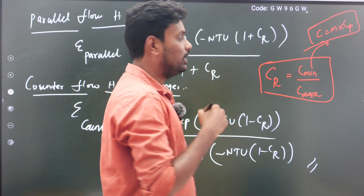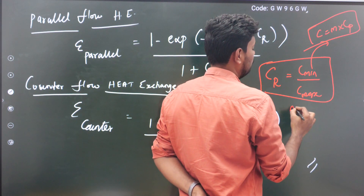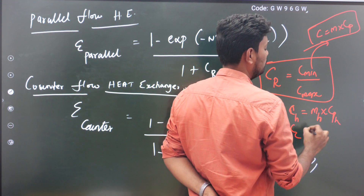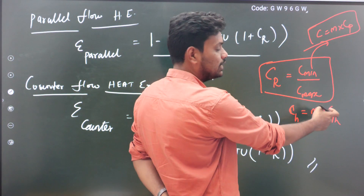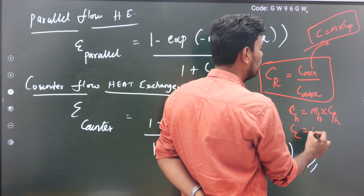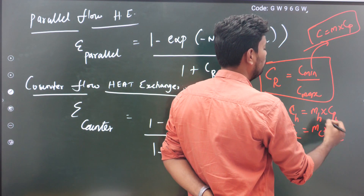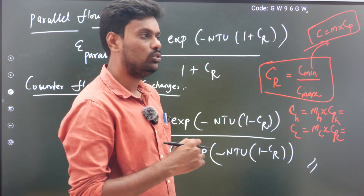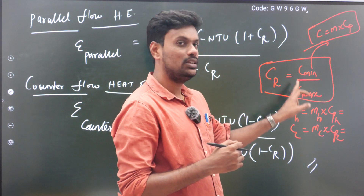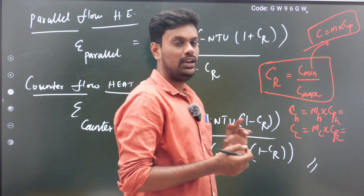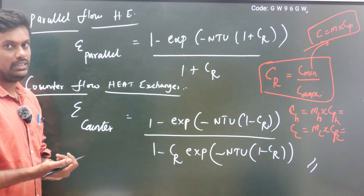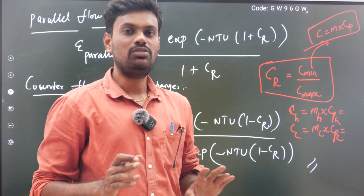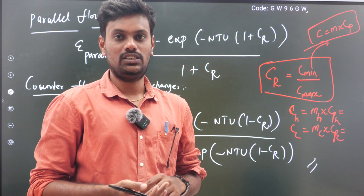There are two fluids, so you find Ch = mh × Cph for the hot fluid and Cc for the cold fluid. Whichever value is lower is C minimum and the higher value is C maximum. Their ratio gives Cr. A similar formula applies for counter flow. That covers the basic definitions and formulas for heat exchangers.